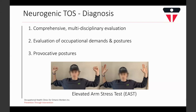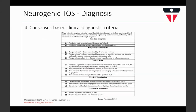The EAST test involves abducting the arms to 90 degrees with the elbows flexed to 90 degrees and repetitively opening and closing the hands for a period of 60 to 90 seconds. The test is considered positive if symptoms are reproduced. The first objective diagnostic criteria for neurogenic TOS was developed in 2013 by the Consortium for Outcomes Research and Education of Thoracic Outlet Syndrome, or CORE-TOS, a consortium of more than 30 clinicians and scientists representing a spectrum of specialties.